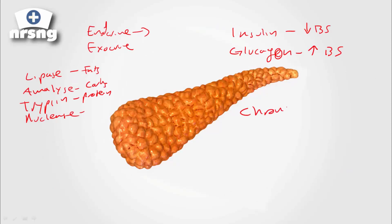With chronic pancreatitis versus acute pancreatitis: with acute pancreatitis, most of these patients are actually going to recover on their own and return to normal function. With chronic pancreatitis, this can be a slow progression that can result in complete loss of pancreatic function. The common cause for chronic pancreatitis is alcohol abuse.